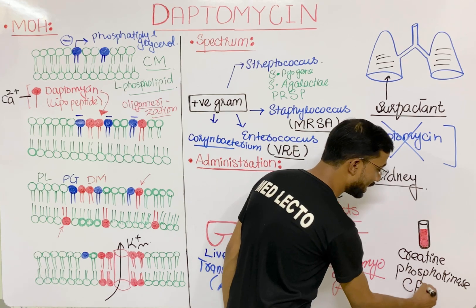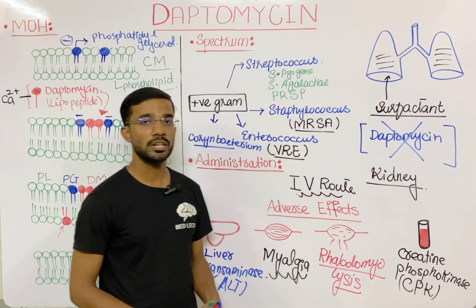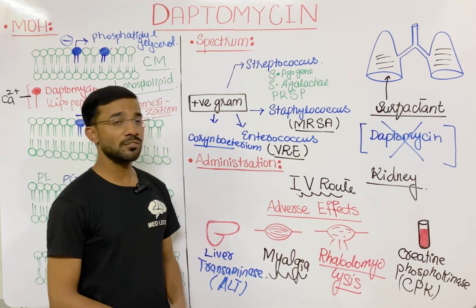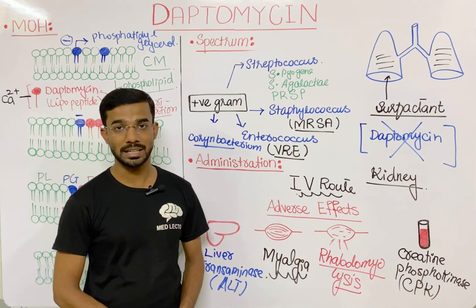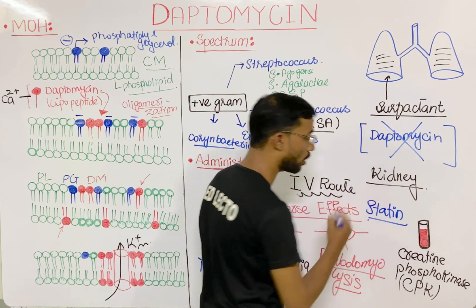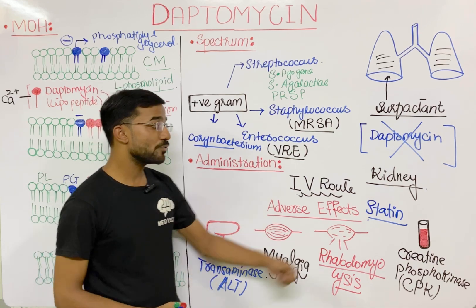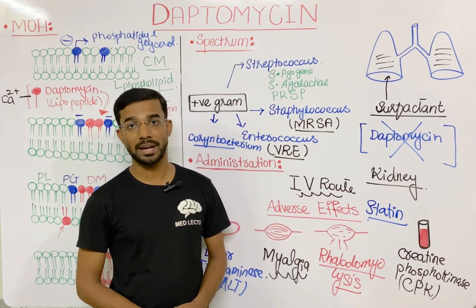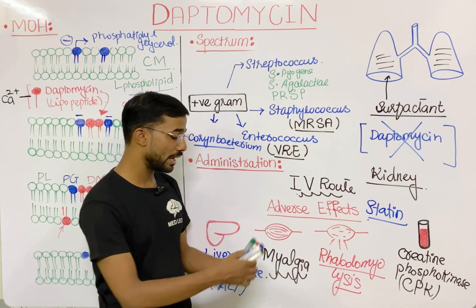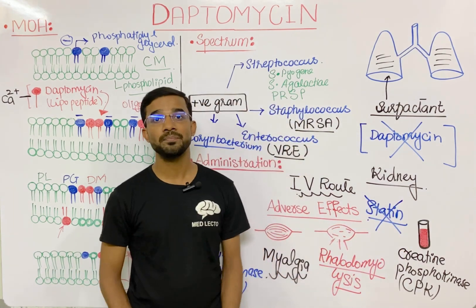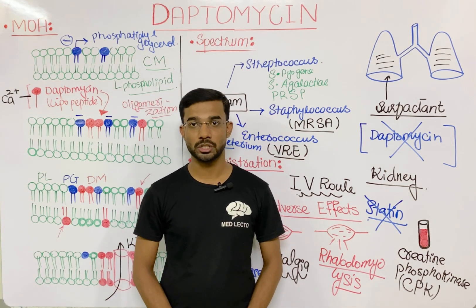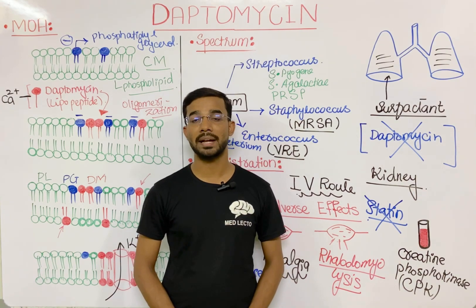The CPK test is used to check for rhabdomyolysis. An important drug interaction: do not use a statin together with daptomycin. Statins are drugs used for lowering cholesterol. If a patient takes a statin along with daptomycin, you will see exaggeration of rhabdomyolysis, so statins should not be co-administered with daptomycin.